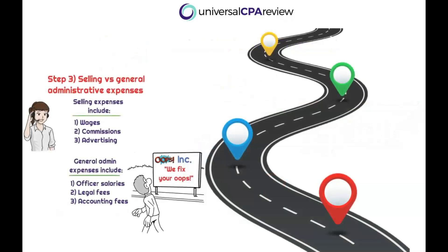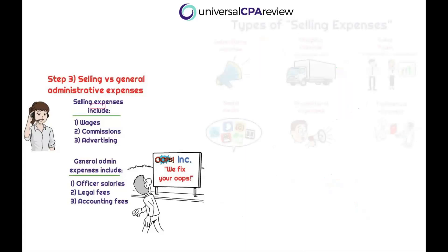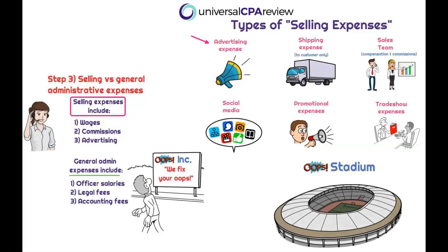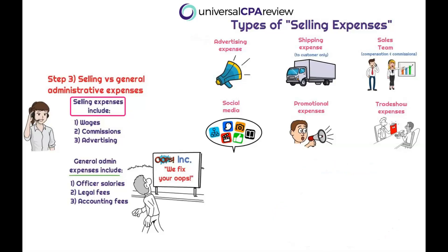The next sneaky step involves knowing the differences between selling expenses and general administrative expenses within SG&A. Selling expenses include wages, commissions, advertising expenses, shipping expenses (freight out), social media costs, promotional expenses, and trade show expenses — essentially anything that goes into building brand awareness. General administrative expenses include officer salaries, legal expenses, and accounting expenses — the back-office nitty-gritty work.